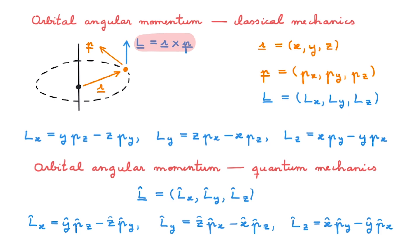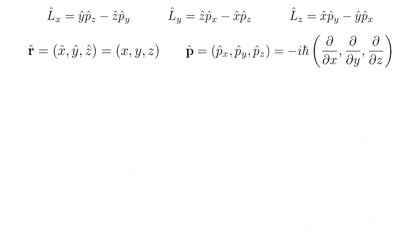Whenever we solve a quantum problem, the very first step is to decide in which basis or representation we must describe relevant quantities such as operators. As orbital angular momentum describes the motion of particles in 3D space, the most useful representation is the position representation. We want to write the angular momentum operators in the position representation, and for that all we really need to know is how to write the position and momentum operators in the position representation. We covered this in the video called 'Position and Momentum' — make sure you check the link in the description, because it'll be really useful.